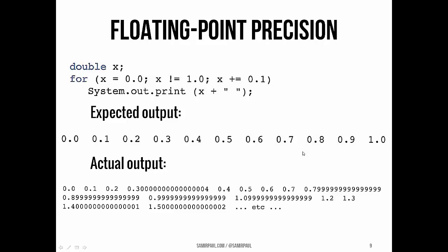We would expect something that looks like this, 0.0, 0.1, 0.2, 0.3, 0.4, 0.5, and so on, all the way until we get to 1.0. Actually, we end up with this weird output and an infinite loop. What gives?